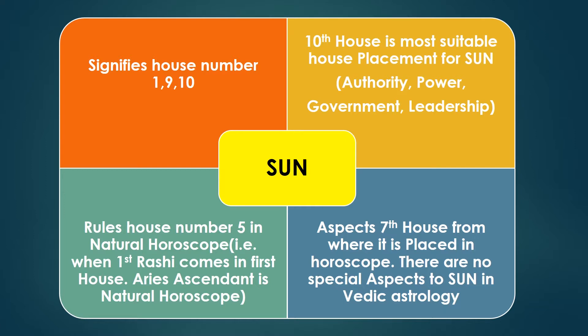Sun is comfortable in house 10 and house 1. The best house placement for any planet would be the 11th house, but for Sun it is the 10th house. Why? Because Sun signifies authority, government, power, leadership, and career — it's all about the 10th. If you have Sun in the 10th house, all these things will get a boost.